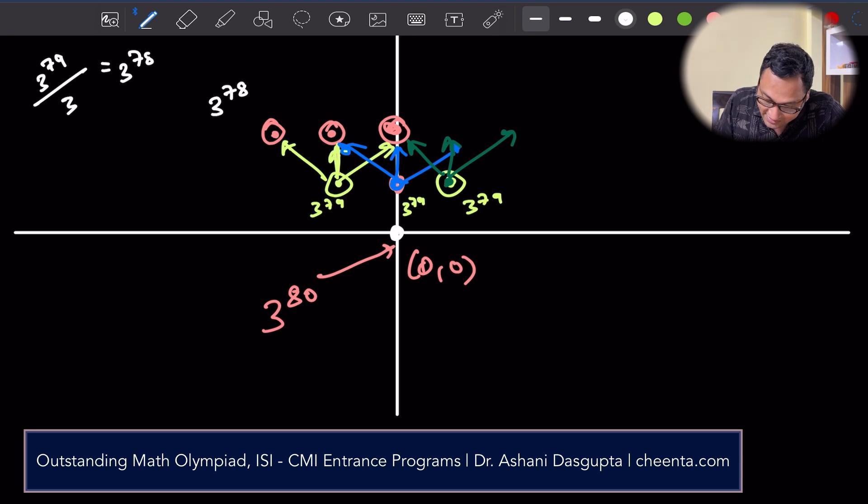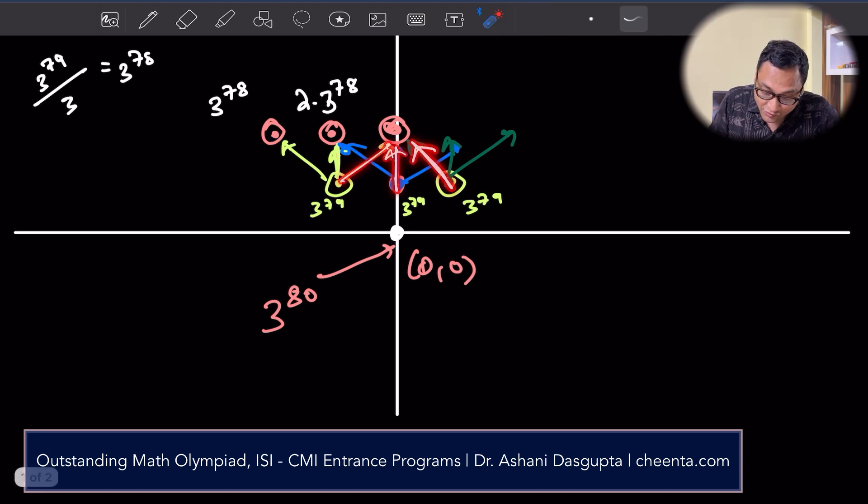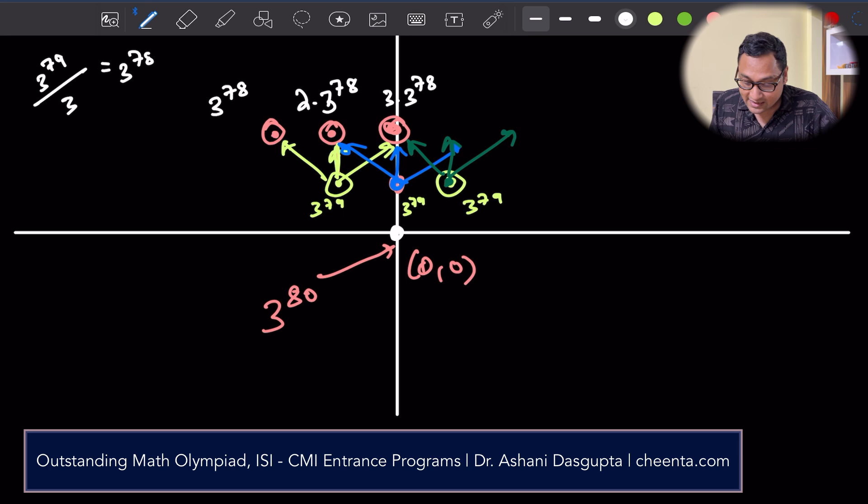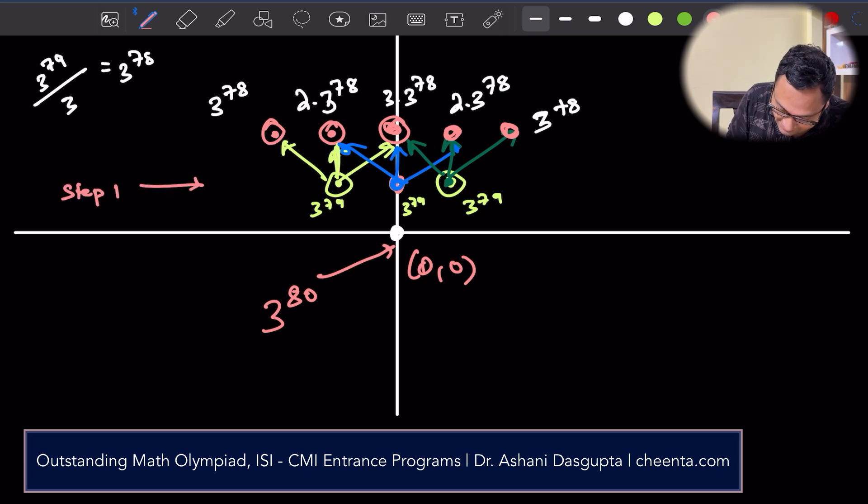So each of them is 3 to the power 78. 2 times 3 to the power 78. 2 arrows coming. So 2 times 3 to the power 78. This one has three arrows coming to it. So 3 times 3 to the power 78. Awesome. 3 times 3 to the power 78. Similarly, this one has two arrows coming to it. So 2 times 3 to the power 78. And finally here, just 3 to the power 78. That's all. That's the third level. Sorry, step 2. That's the step 2. This is step 1. This is step 2.